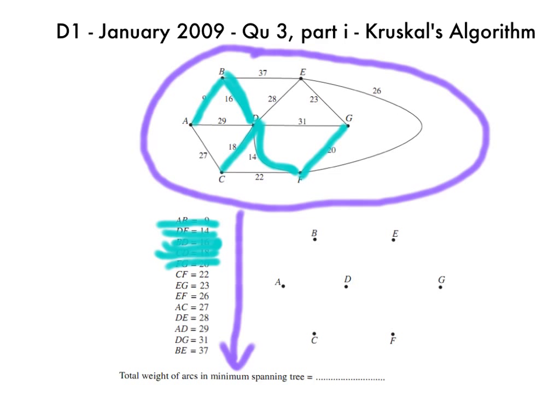Now this is an interesting one. Now CF is 22, so that one would be across there, but we can't do that because that makes a cycle. So we just rub that out like that, so we skip and we go on to the next one.